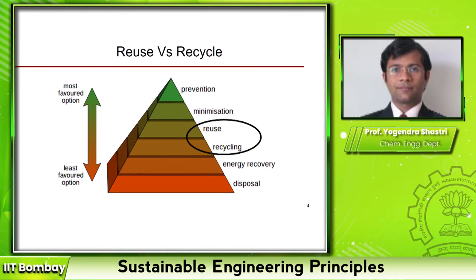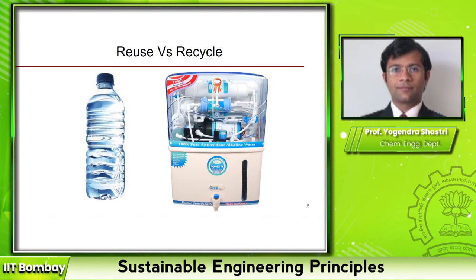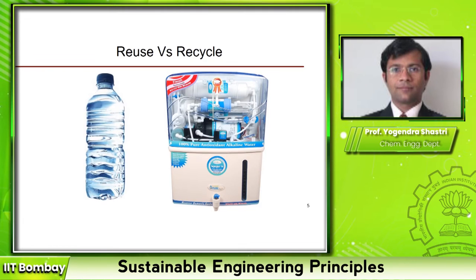To explain this principle, consider two examples. The first is related to plastic products: on the left is a PET bottle such as one used for water or soft drinks, and on the right is a water purifier where most parts are made of plastic — possibly multiple types such as HDPE, LDPE, PET, and so on. Assume both products are no longer usable. The question is: which one would you reuse and which would you recycle?